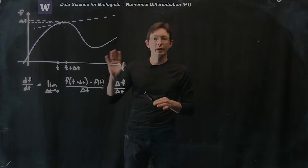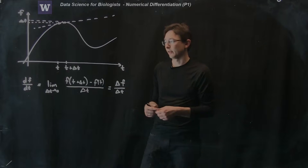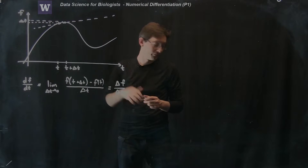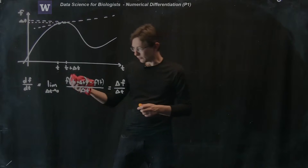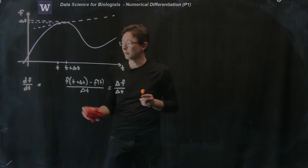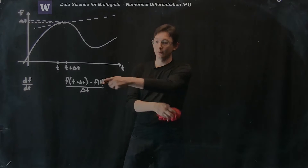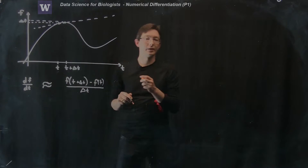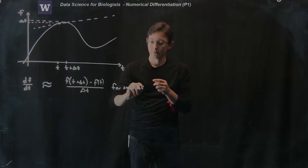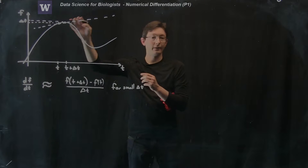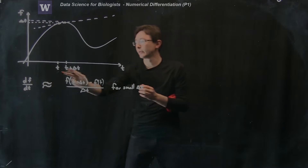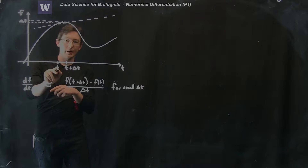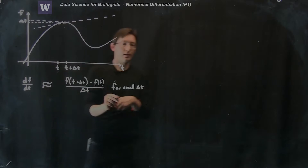This is all fine in mathematics, but in a computer you can't really take the limit as delta t goes to zero. There's only finite precision with which I can represent numbers in a computer, so delta t can get small but can't reach zero. So what we do in MATLAB is essentially drop the constraint of taking the limit, and say this isn't exactly equal to df/dt but it's approximately equal for small delta t. Because we're using a point t and another point forward in time by delta t, this is called a forward difference scheme.